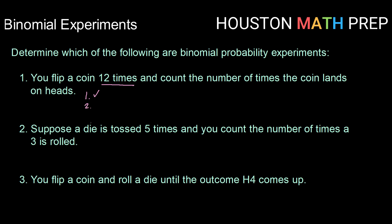The second thing we need to check is that there are only two possible outcomes, success or failure. Here, since we're looking at the number of times that the coin lands on heads, we can count success as landing on heads and failure as landing on tails. So there are only two possible outcomes. We've met criteria number two.